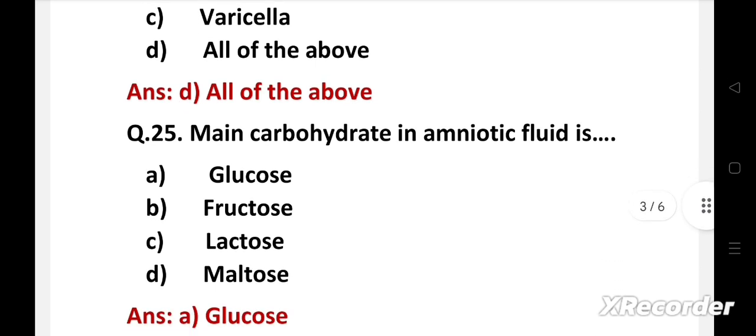Right answer is option A: glucose. 20 mg per deciliter glucose is found in amniotic fluid. Amniotic fluid is the fluid that surrounds the fetus during pregnancy.